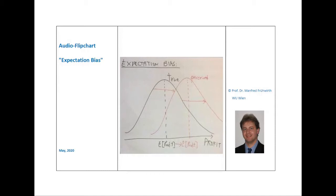The expectation bias may be caused, for instance, by behavioral phenomena like excessive optimism or the so-called better than average effect.